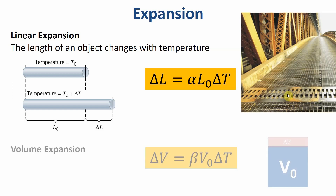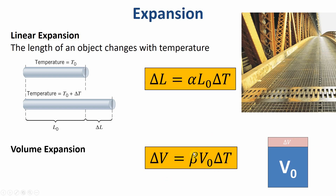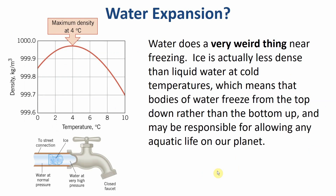Similarly with volume, we have an equation that's basically identical. The change in volume delta V equals some constant beta times the original volume times the change in temperature. For lots of substances, beta is equal to three times alpha, as it needs to be for a volume change.